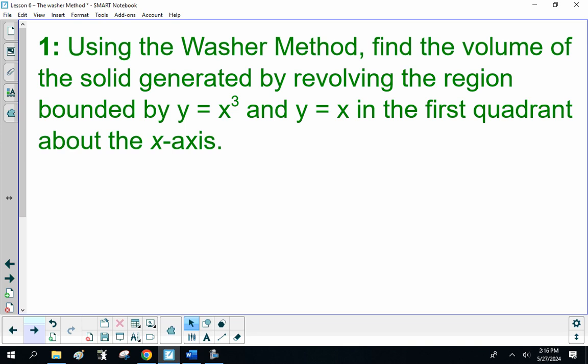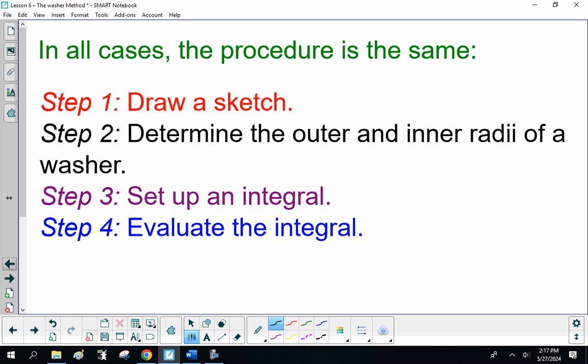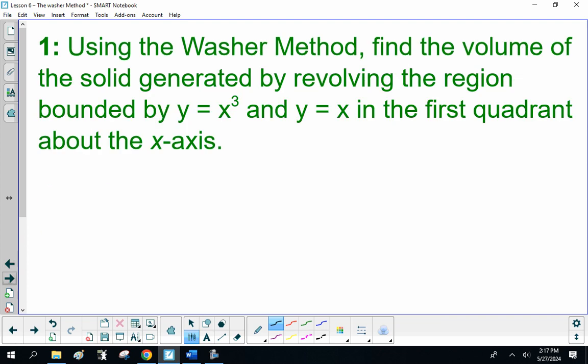Using the washer method, find the volume of the solid generated by revolving the region bounded by y = x³ and y = x in the first quadrant above the x-axis. Draw a sketch. Very first thing.